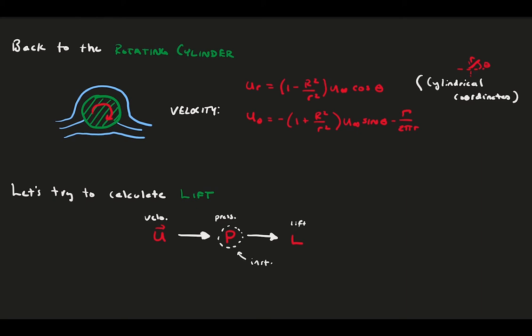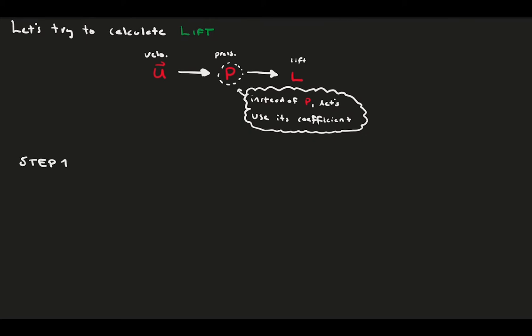We will prefer to work with appropriate non-dimensional coefficients, like the lift, drag, and pressure coefficients, instead of dealing with the raw quantities. Step 1: we'll find pressure from velocity. The pressure coefficient is defined similarly to the lift and drag coefficients.